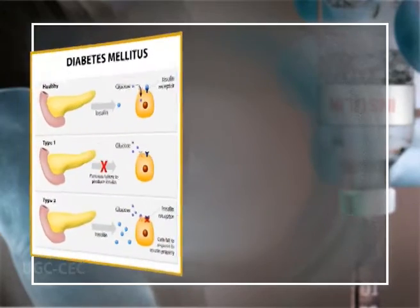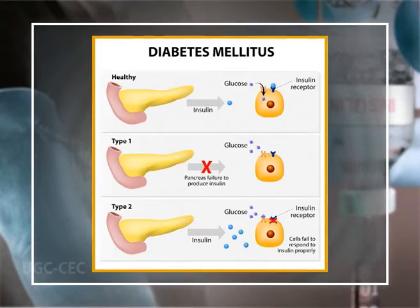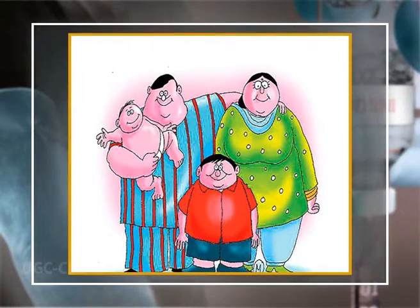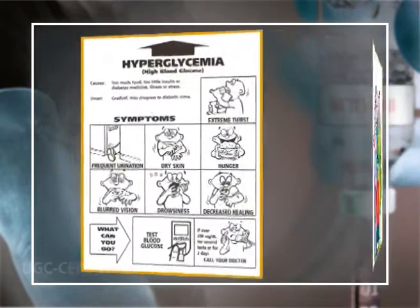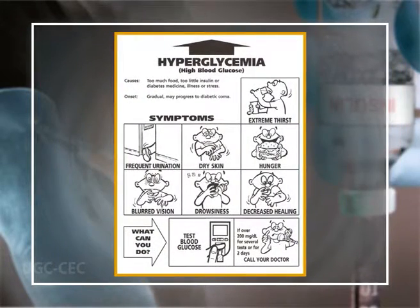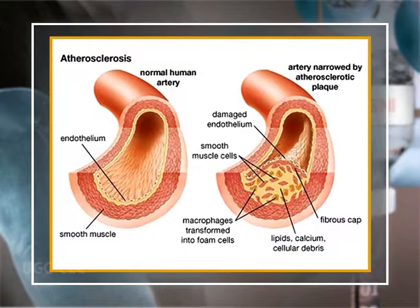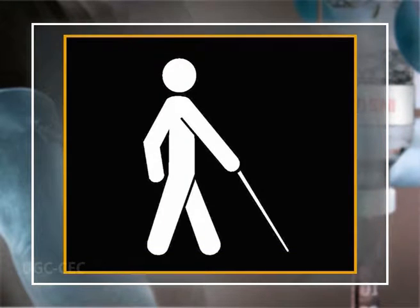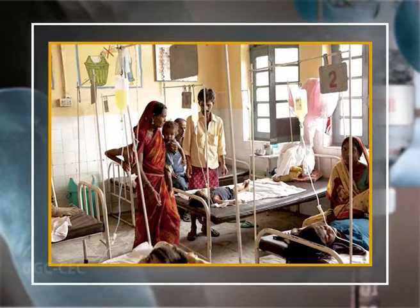In recent years, developed nations have witnessed an explosive increase in the prevalence of diabetes mellitus, predominantly related to lifestyle changes and the resulting surge in obesity. The metabolic consequences of prolonged hyperglycemia and dyslipidemia — including accelerated atherosclerosis, chronic kidney disease, and blindness — pose an enormous burden on patients and on the public health system. Improvements in understanding the pathogenesis of diabetes and its therapy and prevention are critical to meet this healthcare challenge.